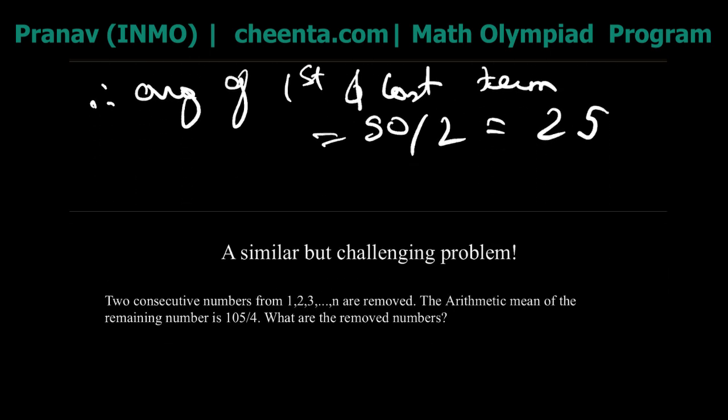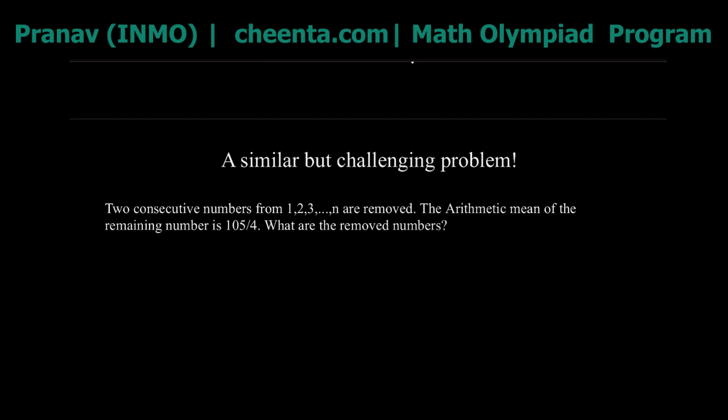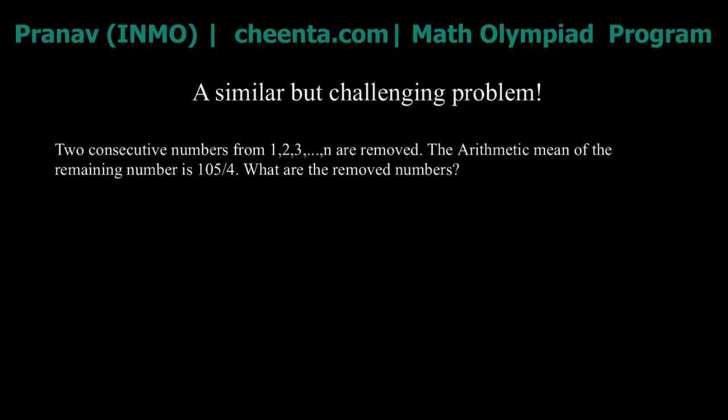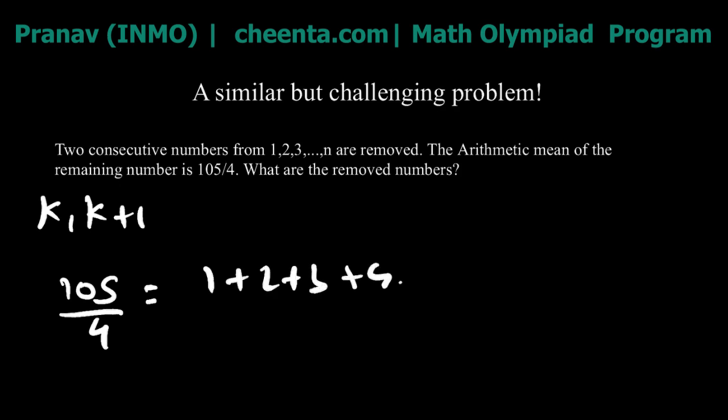Now I have a nice challenge problem for you. Two consecutive numbers from 1, 2, 3, … up to n are removed. The arithmetic mean of the remaining numbers is 105/4. What are the removed numbers? Let the removed numbers be k and k + 1. Then 105/4 equals the sum (1 + 2 + 3 + … + n) minus k minus (k + 1), divided by n − 2.